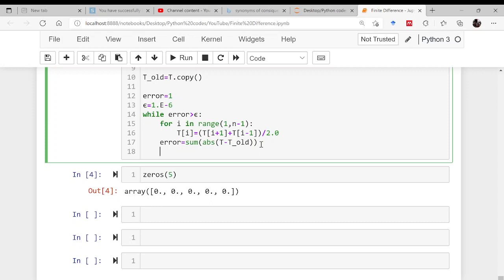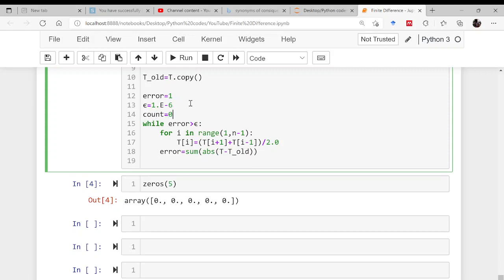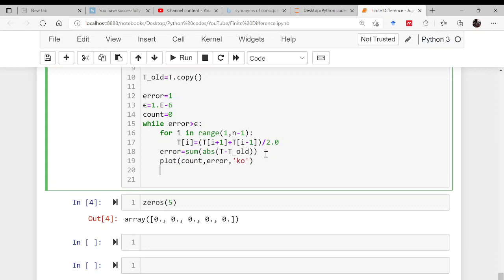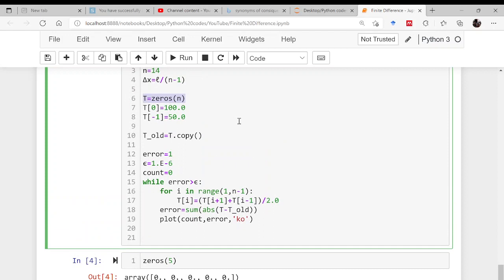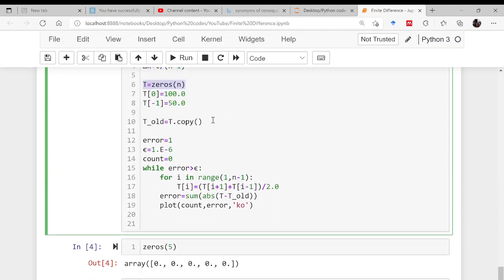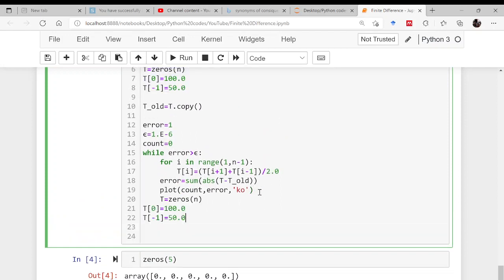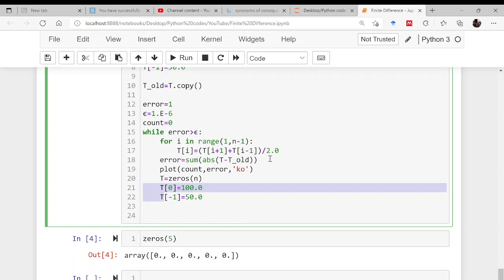Once this is done, I will be plotting this error. For that matter, I have to use a counter, count. Let us say count is equal to 0 and I have to plot this count and this error with some black color. Then, once this is done, for the next iteration, this ti will become the initial guess. So this is what the guess is. Initially, I have assumed everything to be zero except the boundaries. I will be copying this, I will be bringing it down. Please, mind the indentation. So that is done.